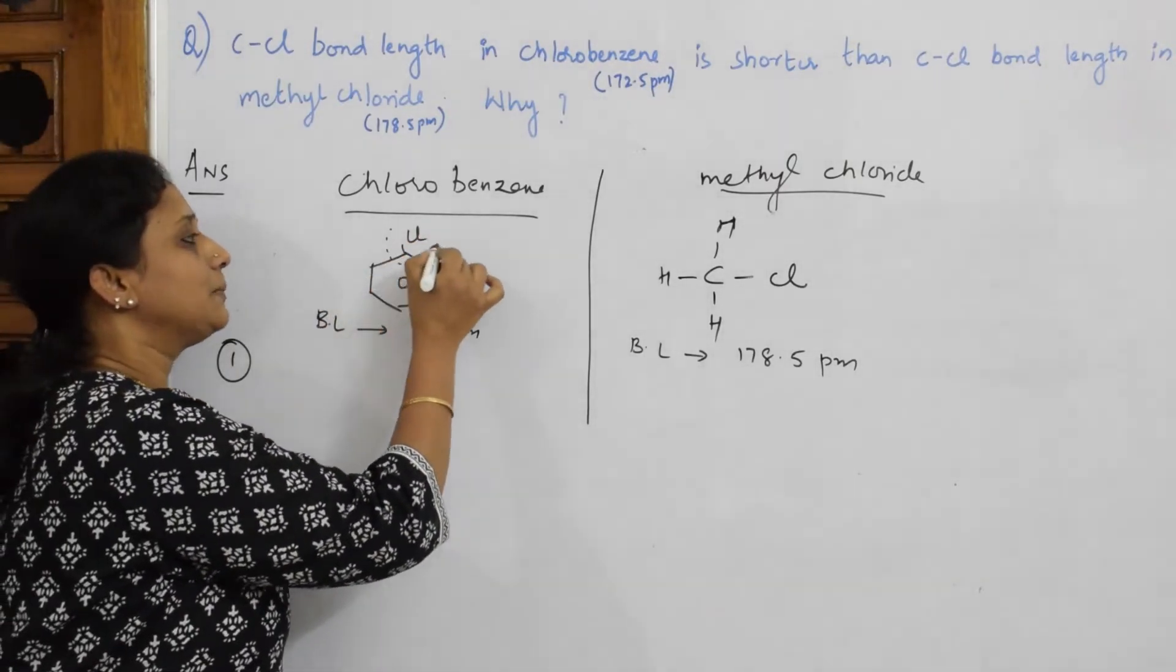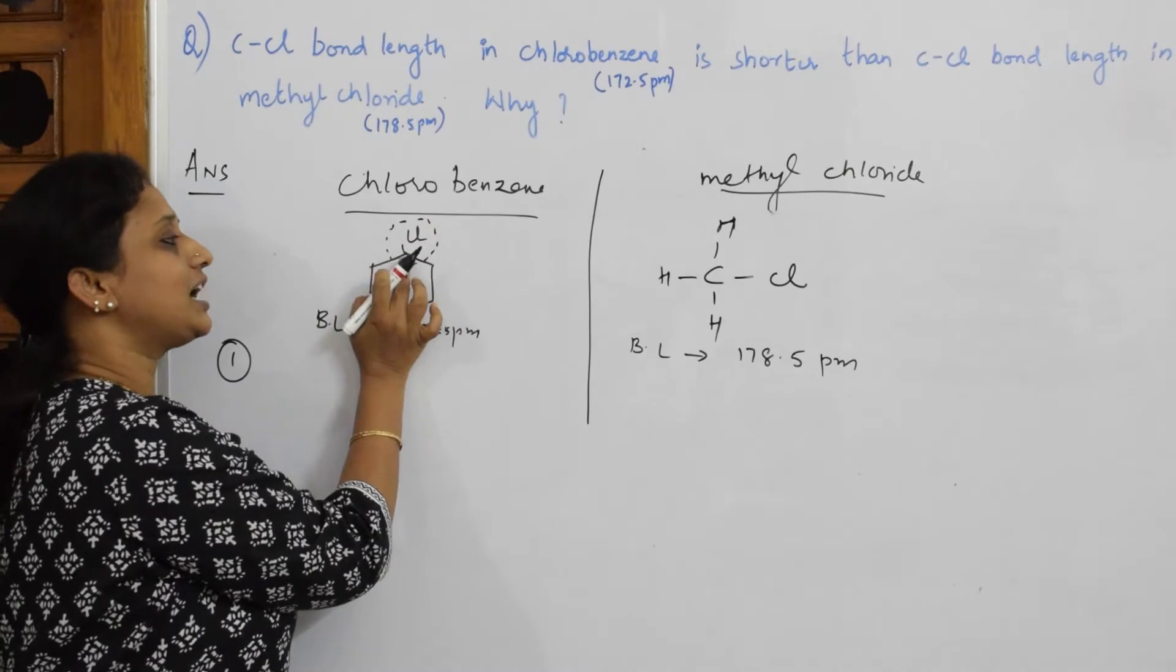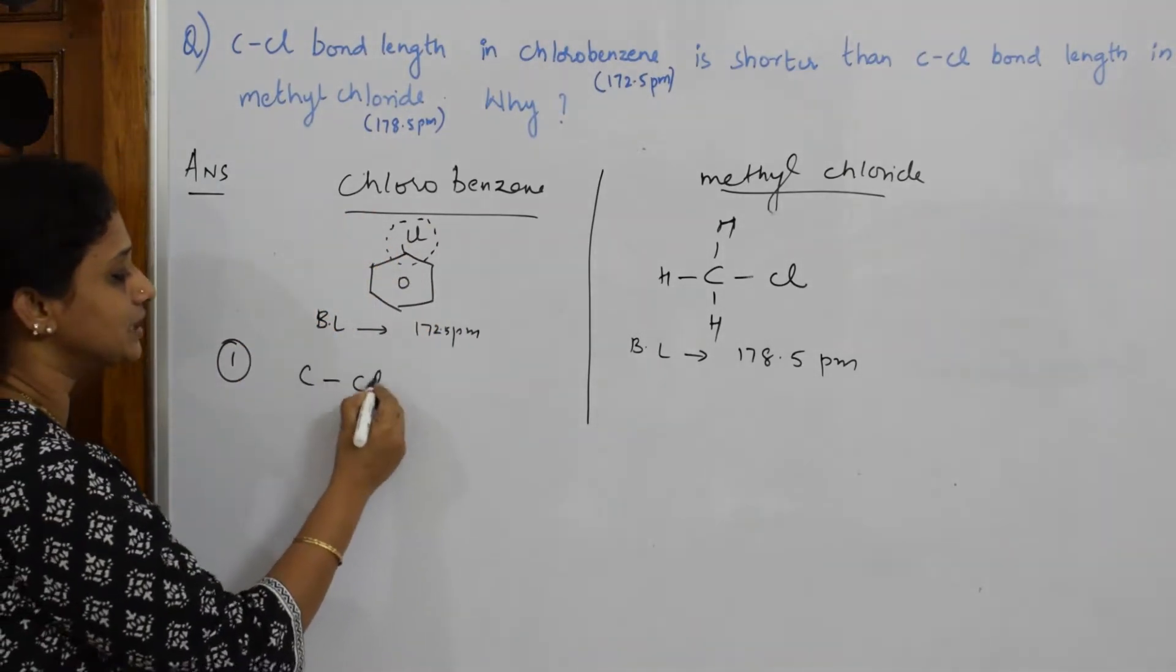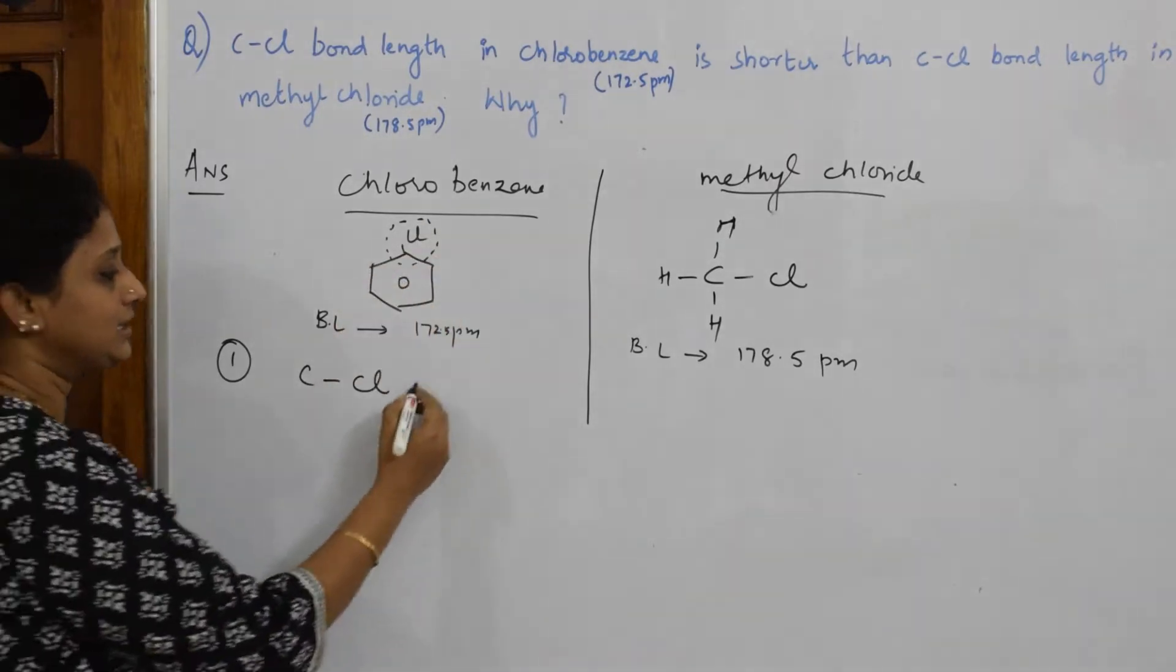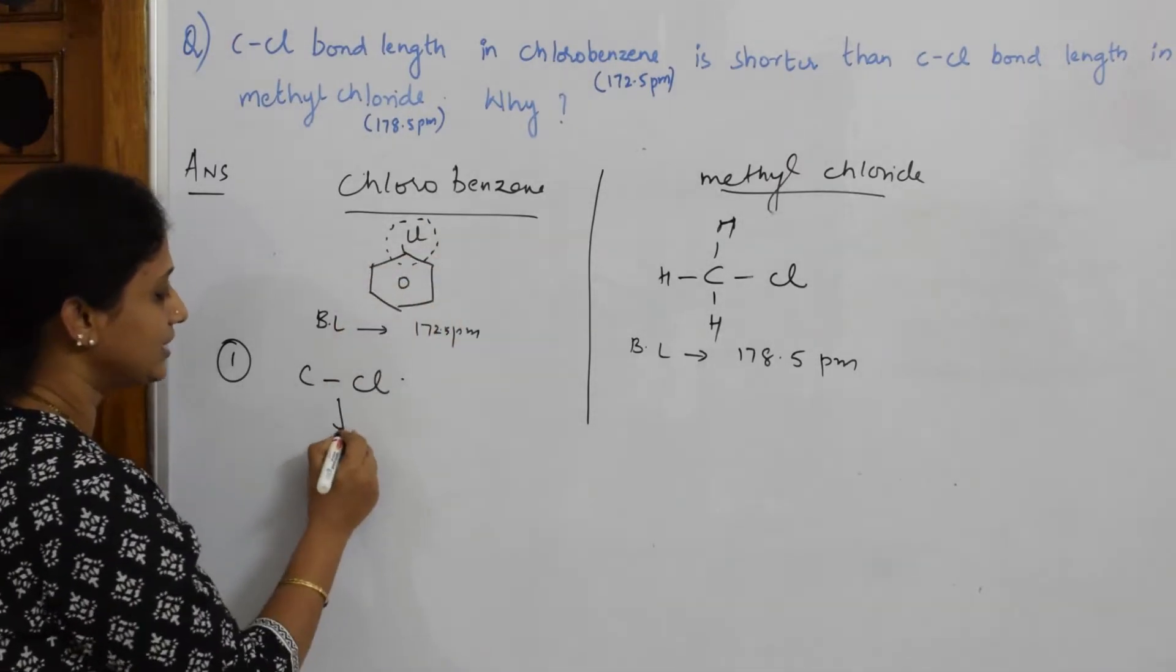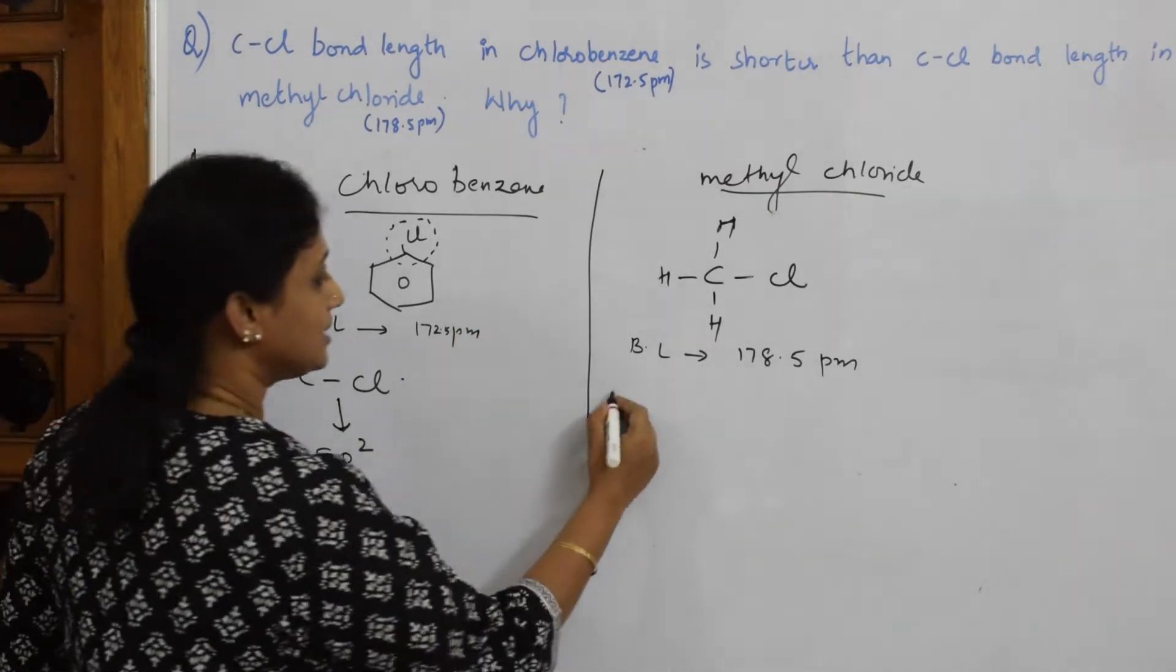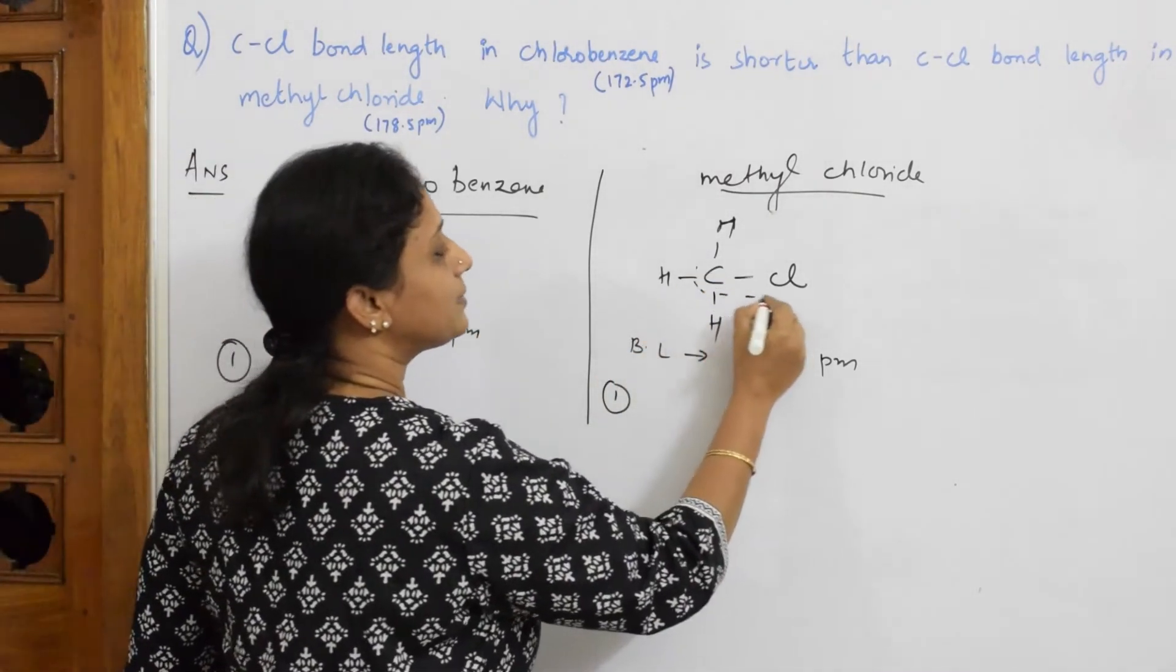So first when I start my answer, I have to concentrate at this particular point. I have to see what is the hybridization between C-Cl here. So the hybridization observed in this particular part is sp2 hybridization.